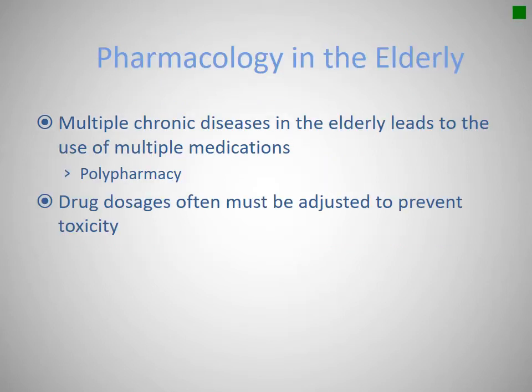Many of the chronic diseases that the elderly face lead to a bunch of different medications, resulting in polypharmacy — taking many different medications to combat different diseases. Sometimes drug dosages have to be changed so they don't reach toxic levels, and sometimes drugs interact with each other. When you see a different specialist for every disease, the doctors don't always talk to each other. So polypharmacy is a challenge for us as EMS professionals to ensure medications aren't interacting or causing the problem we're called for.